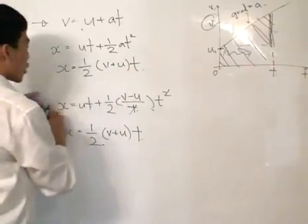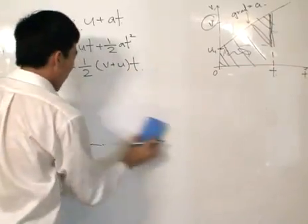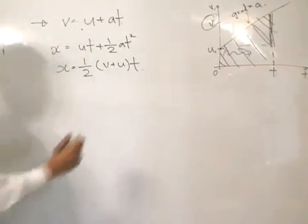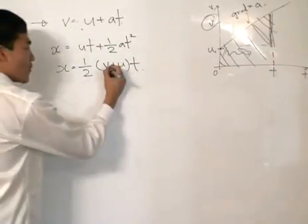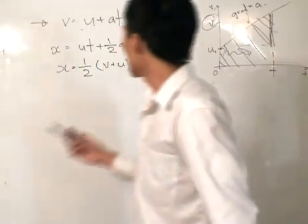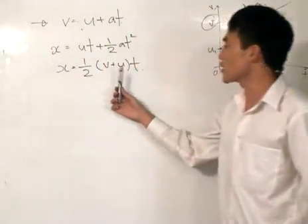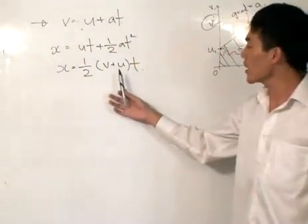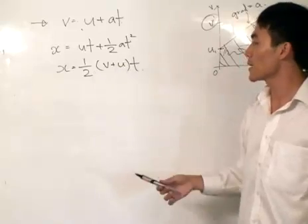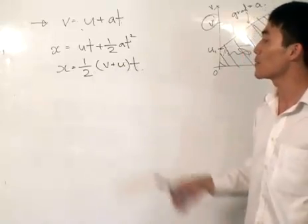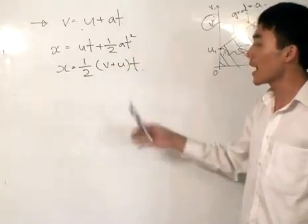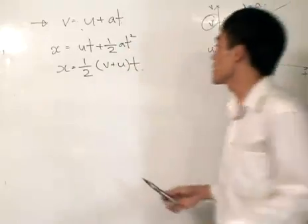A good way to remember this is: if you're moving under constant acceleration, you're just taking the average velocity — add the two velocities together, divide by 2, then multiply by time to get the displacement.